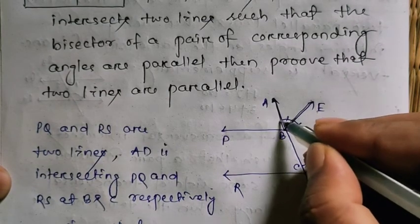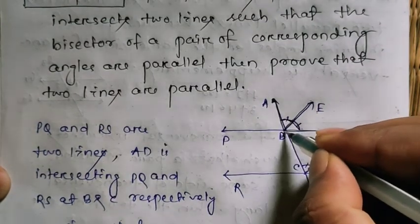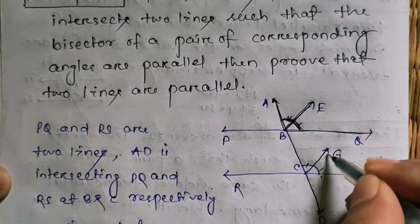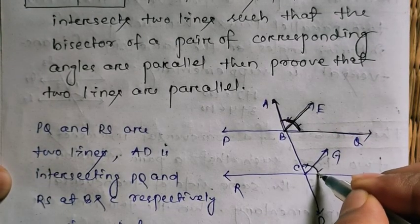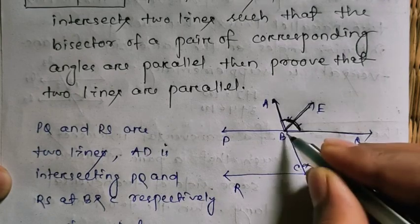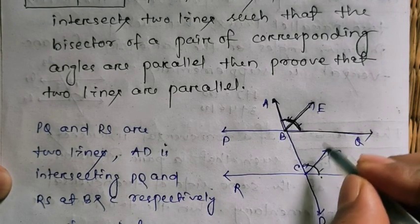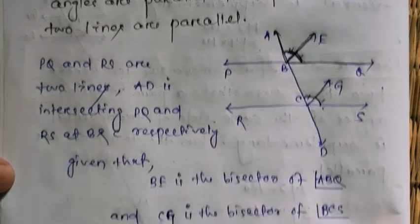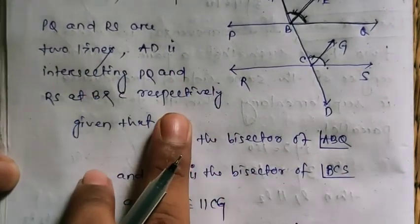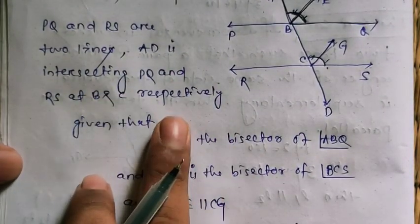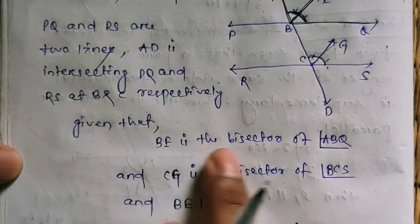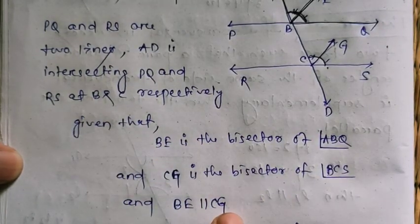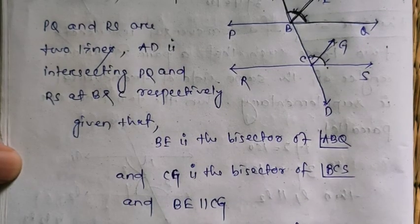Since BE is parallel to CG and AD is the transversal, angles ABE and BCG are corresponding angles. Since BE is parallel to CG, angle ABE equals angle BCG.